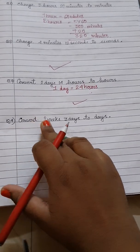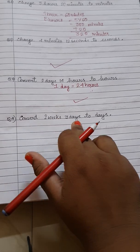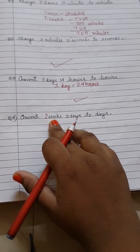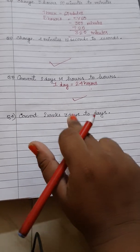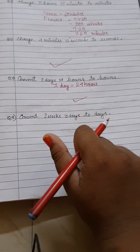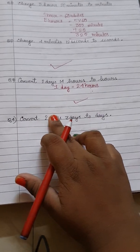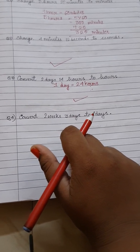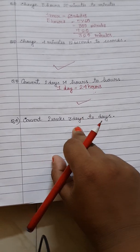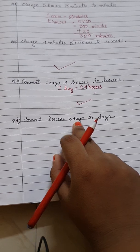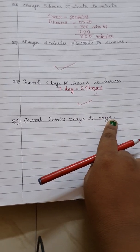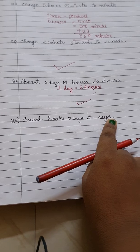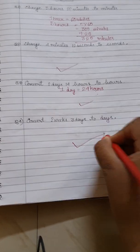Next: convert 2 weeks 3 days to days. As you know, 1 week has 7 days. So 2 weeks will be how many days? First find that out, then add 3 days to get the final number of days. In this way you will do this.